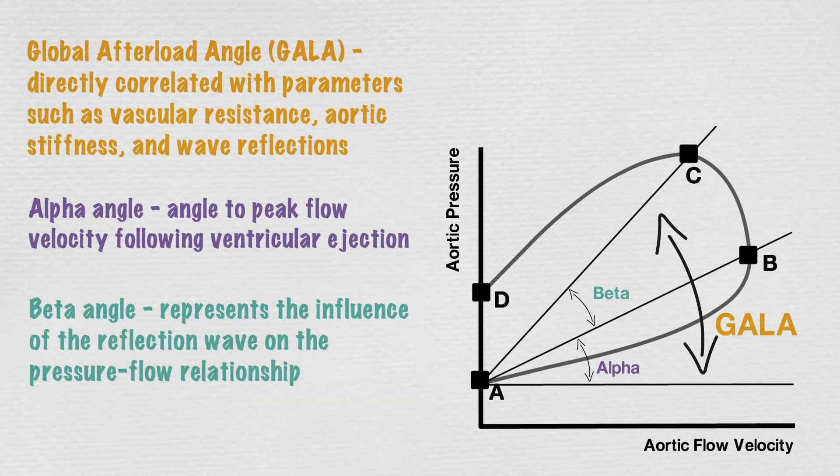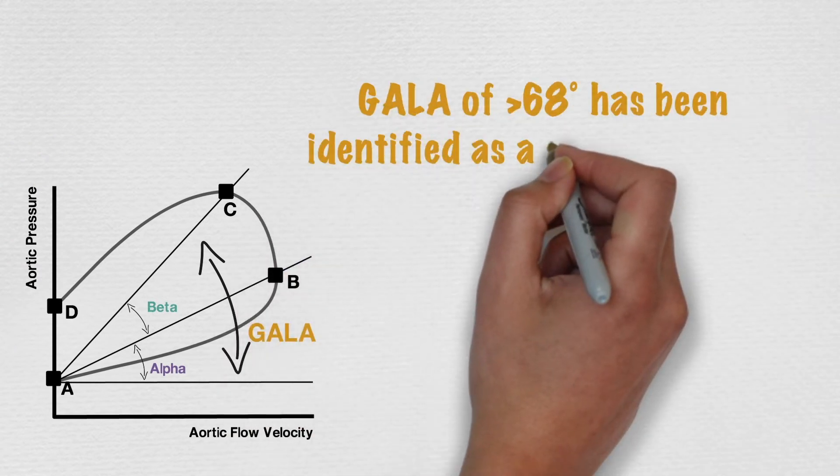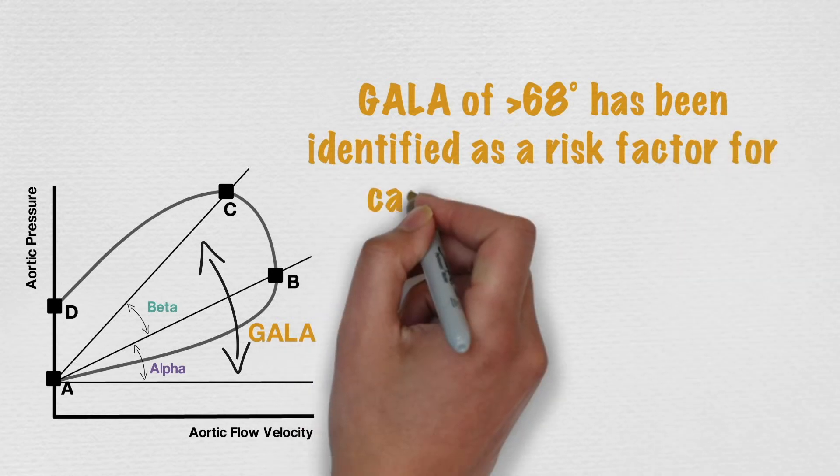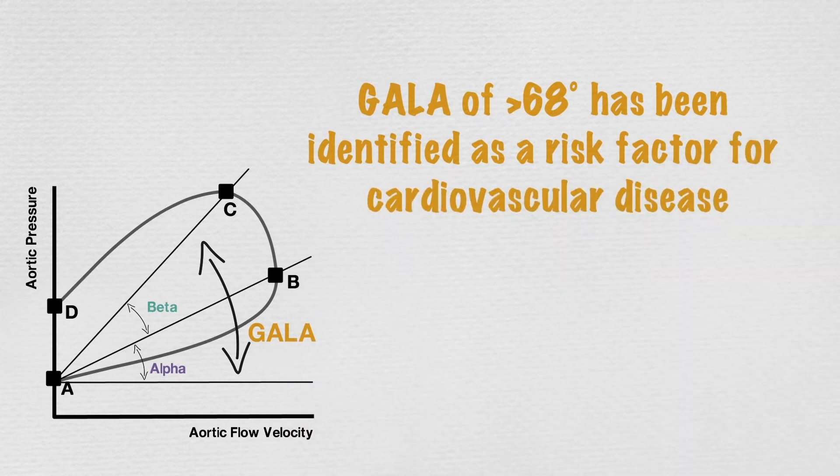These angles provide information on both cardiovascular risk and the hemodynamic response to treatment. And a GALA of more than 68 degrees has been shown to be predictive of cardiovascular disease.